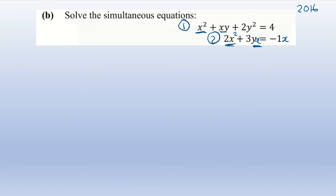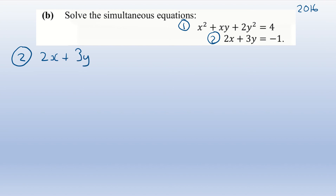We'll label the equations: equation one and equation two. We cannot use the elimination method here because x squared is not the same as x. Trying to multiply equation two by x gives 2x squared plus 3xy minus x — and you still won't have a y squared term. Using substitution is the correct approach for this type.